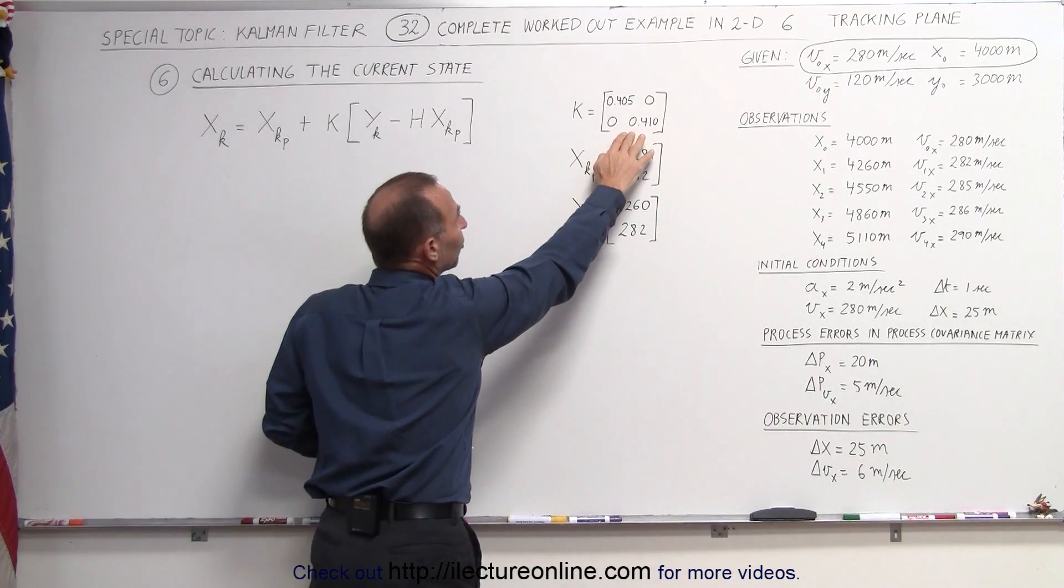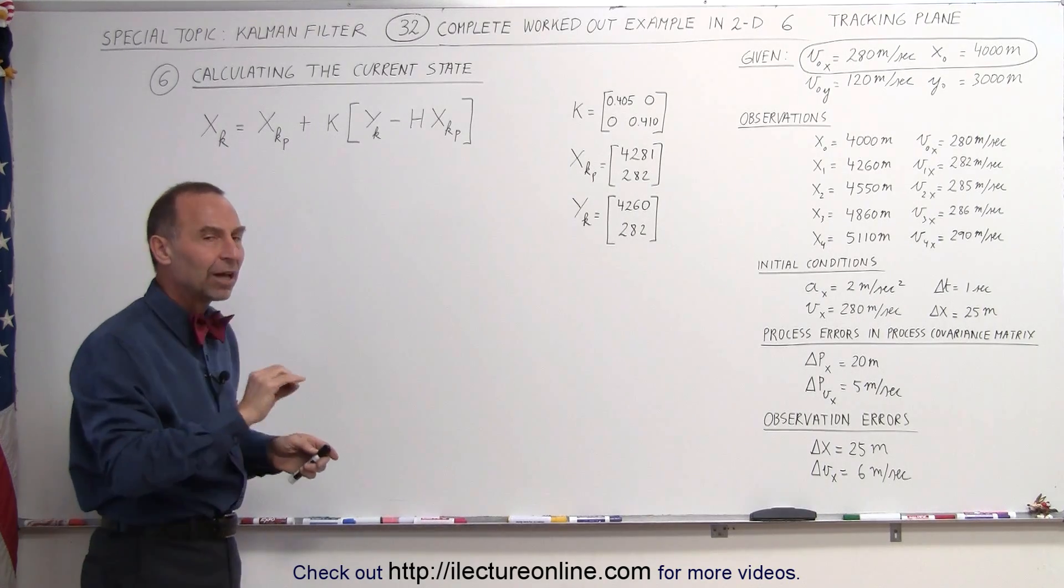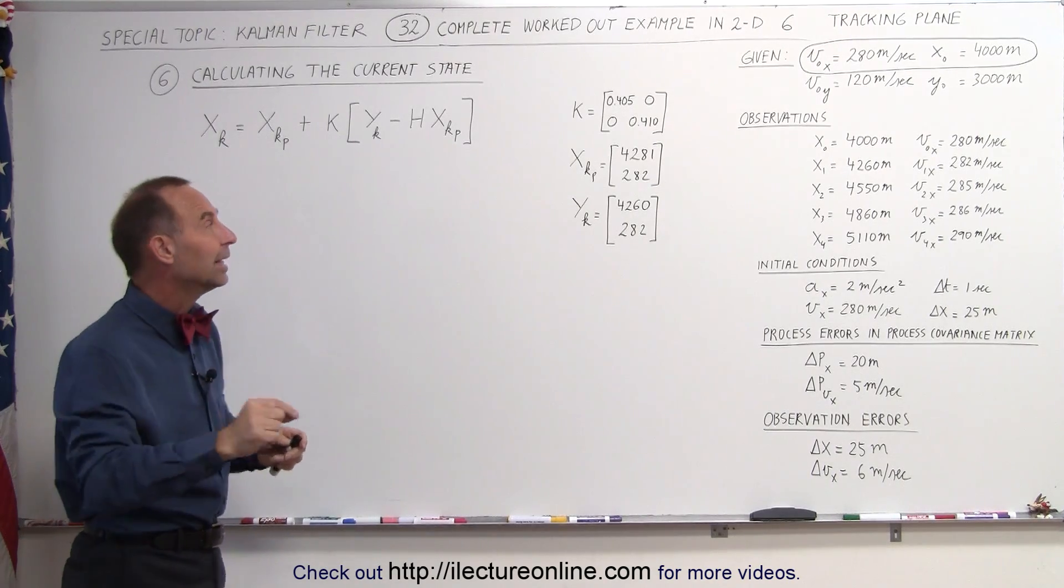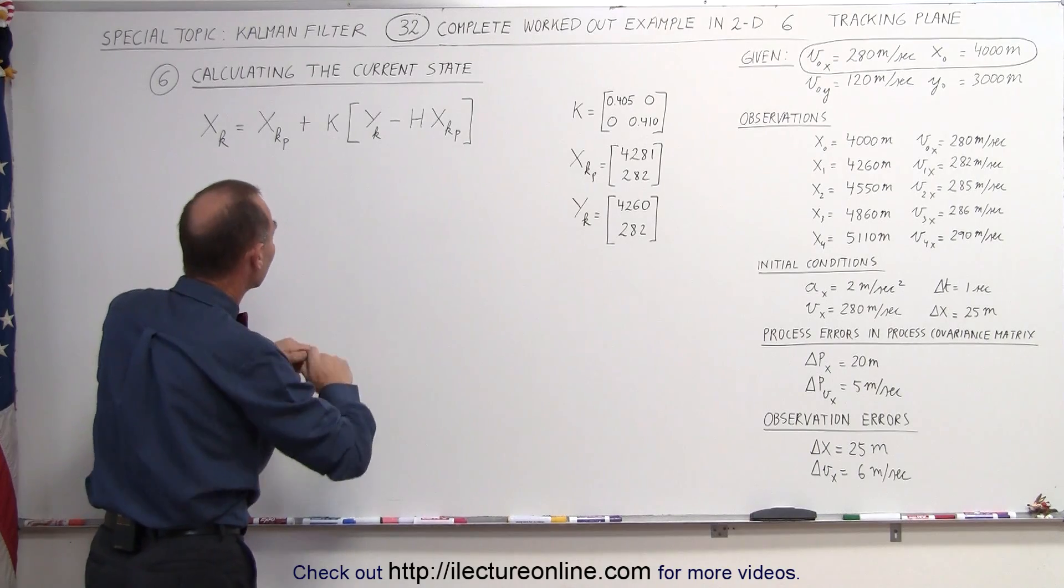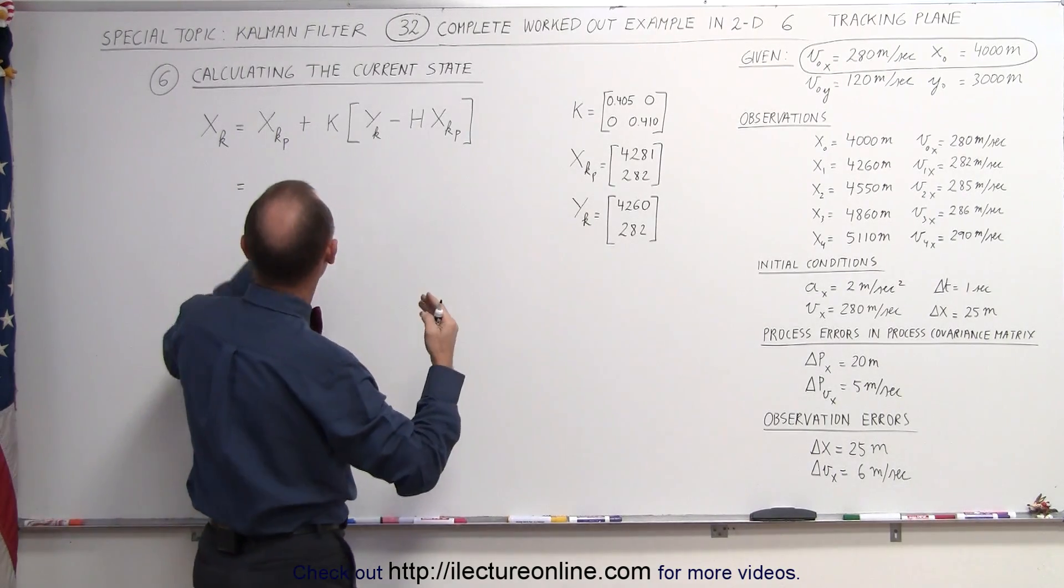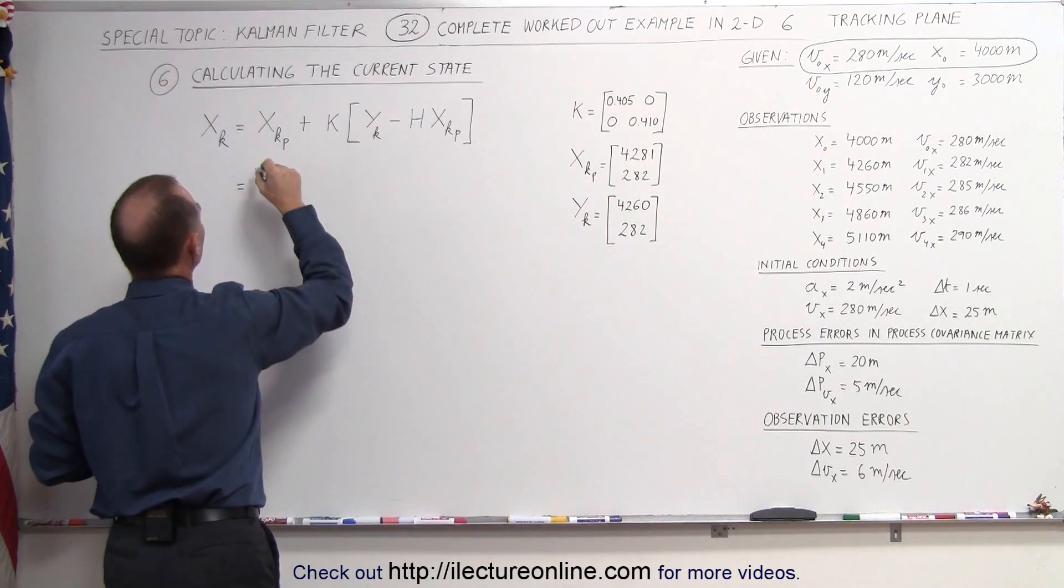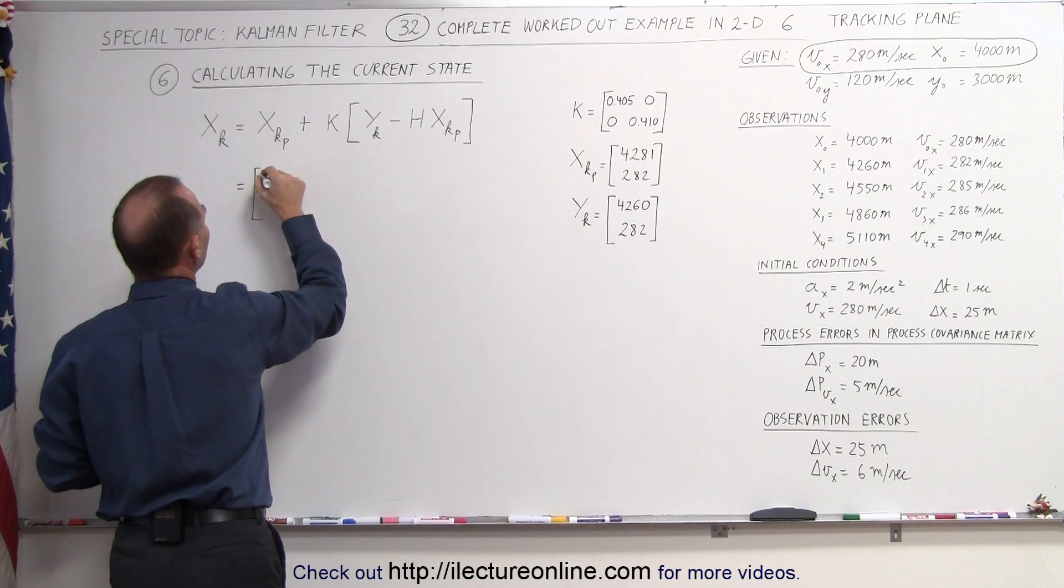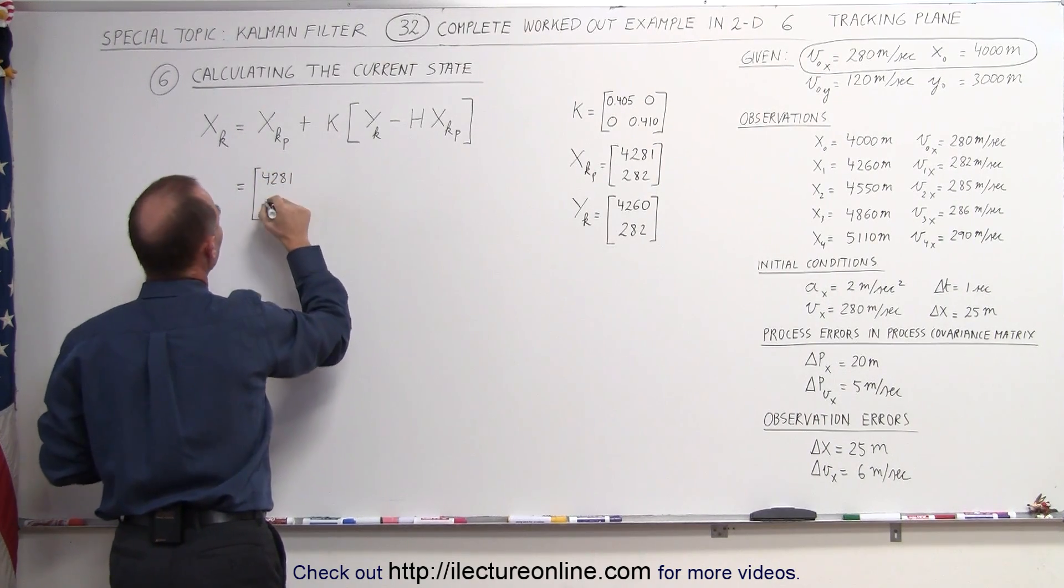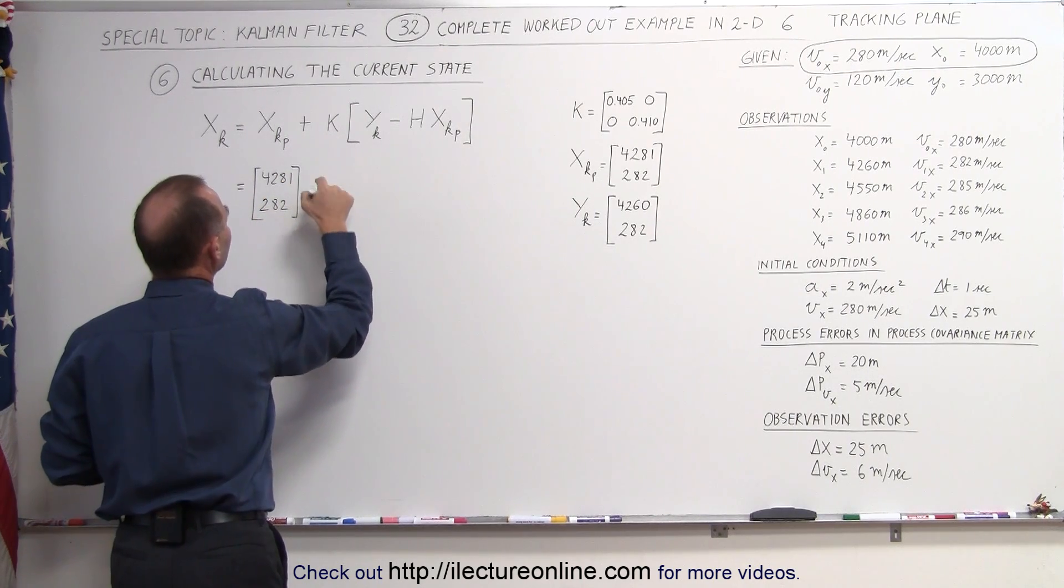Let's go ahead and plug in the numbers and see what that looks like. Here it looks like the number is less than one half, which means we put less value in the measured value and a little bit more value in the predicted state. Since we couldn't remember what they were, I wrote them down. So the predicted state matrix is over here.